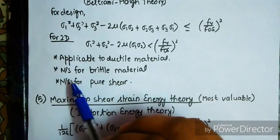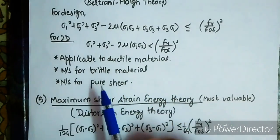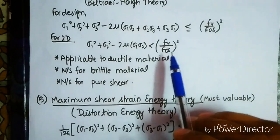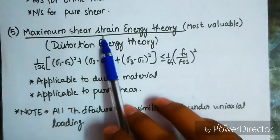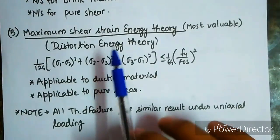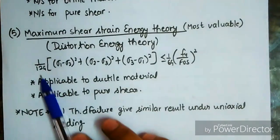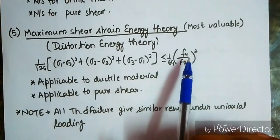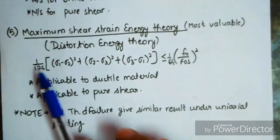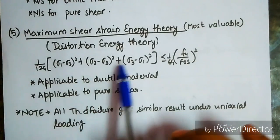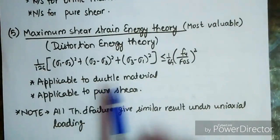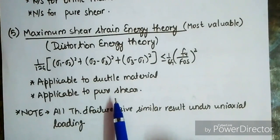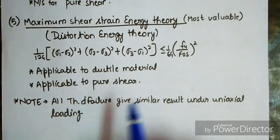(5) Maximum Shear Strain Energy Theory (Distortion Energy/von Mises): (1/12G)[(sigma-1 - sigma-2)² + (sigma-2 - sigma-3)² + (sigma-3 - sigma-1)²] must be less than (1/6G)(Fy/FOS)²; applicable to ductile material and pure shear cases — this is the most applicable theory. All theories of failure give similar results under uniaxial loading.